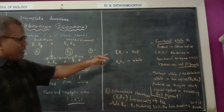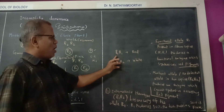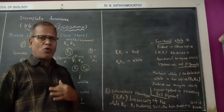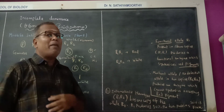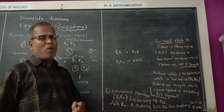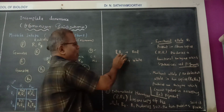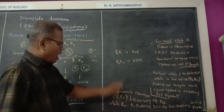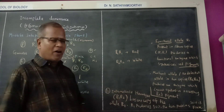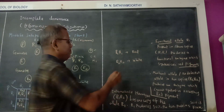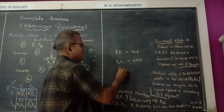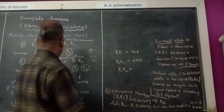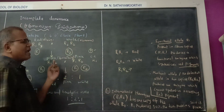There are two genes: R1 and R2. R1R1 is responsible for red colour. R2R2 is responsible for white colour. If they are in a heterozygous condition, they produce pink coloured flowers.